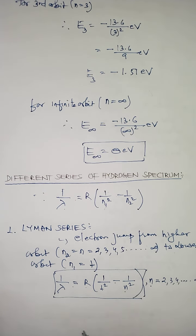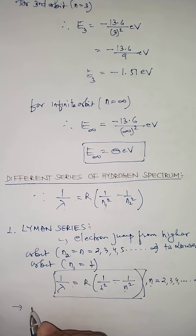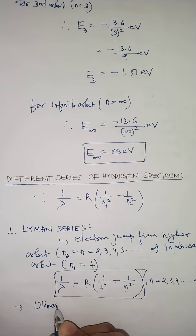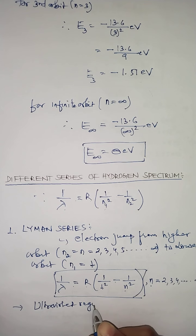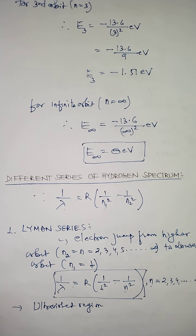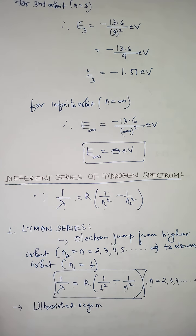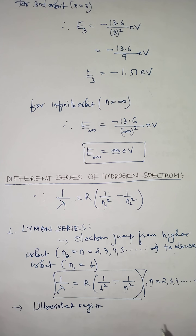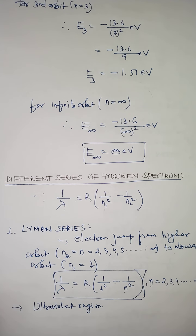As per the observation made by Lyman, this emitted radiation was obtained in the ultraviolet region. So keep in mind that Lyman series lies in the ultraviolet region. Ultraviolet rays are electromagnetic waves having a certain wavelength range. When you calculate the wavelength of emitted radiation in Lyman series using this formula, all the wavelengths lie in the ultraviolet region. Lyman observed this series in the year 1916.